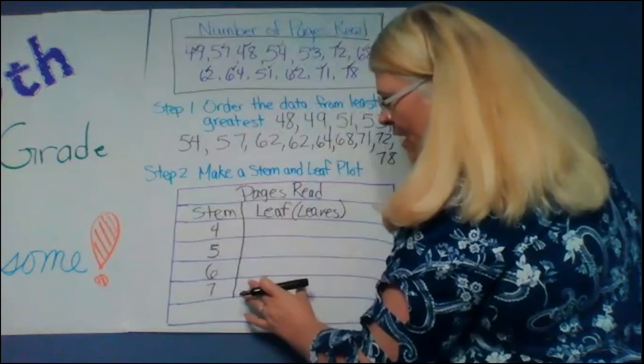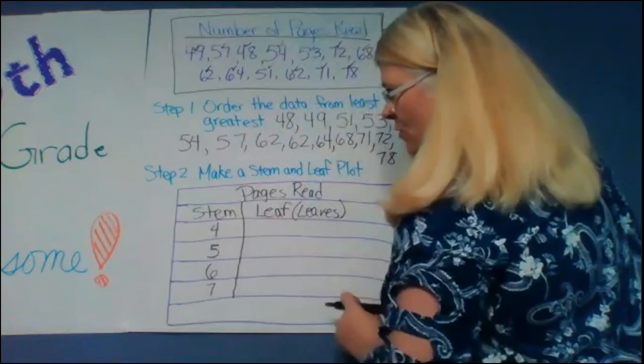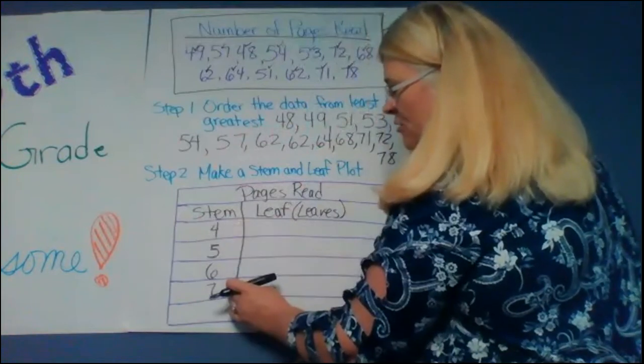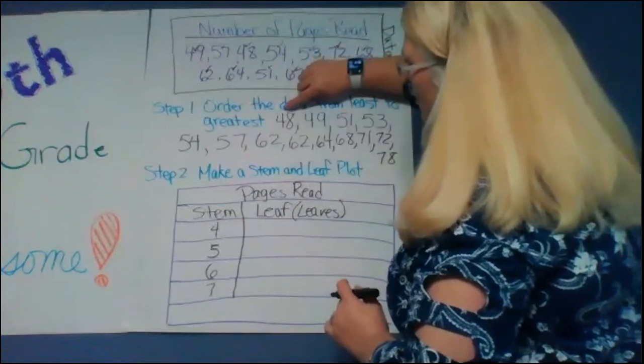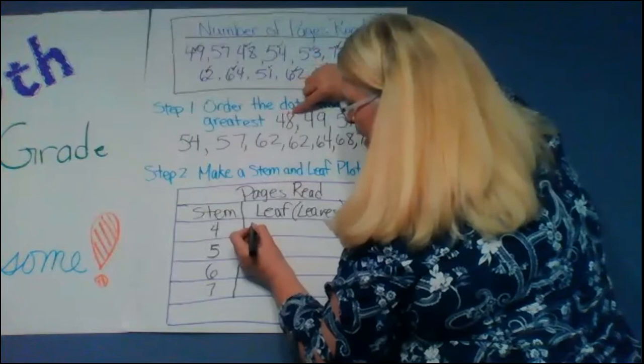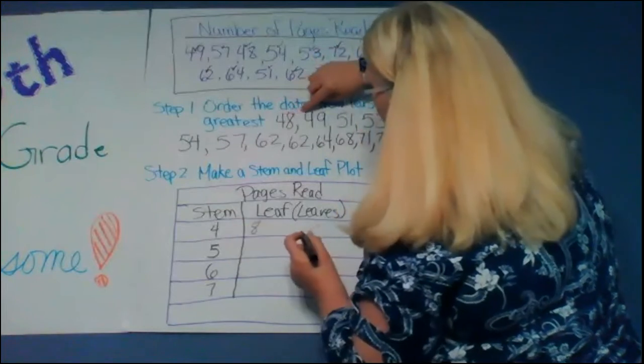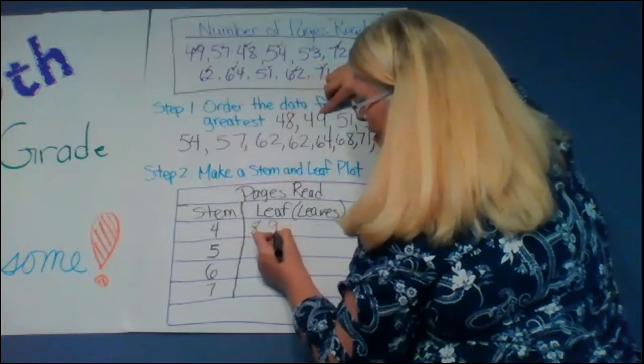So I've already kind of figured out what my stem and leaf is going to be. I've got my tens over here and now I need to fill in my leaves. So I'm going to come up here and my lowest is 48. So an eight goes here and then after it goes a nine.